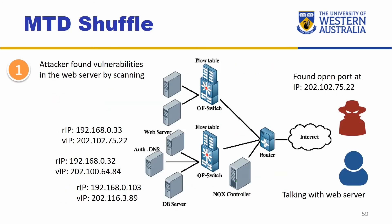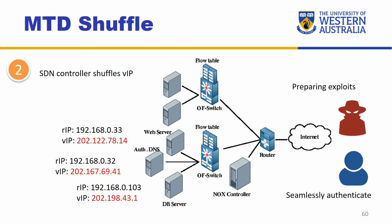In the first phase, we have the attacker who has been scanning around and found vulnerabilities in the web server. The web server's real IP address is 192.168.0.33, but it has a different virtual IP address. The real IP address is only visible to yourself and the controller. So what the attacker sees is the address at 75.22, which has a vulnerability they can exploit.